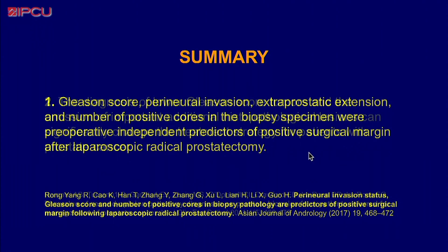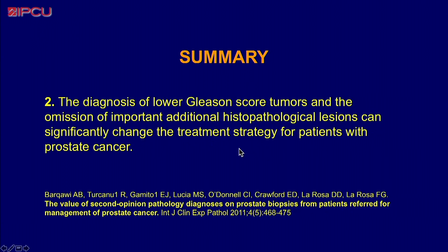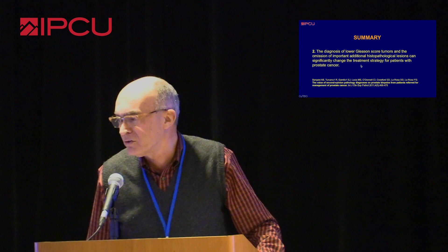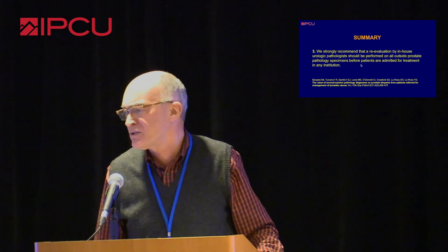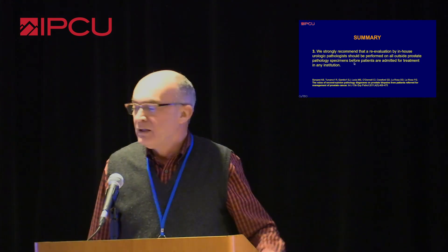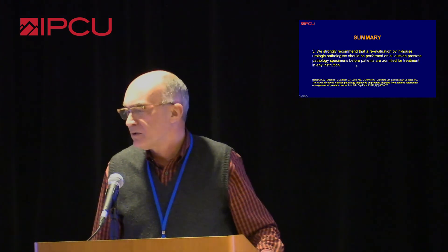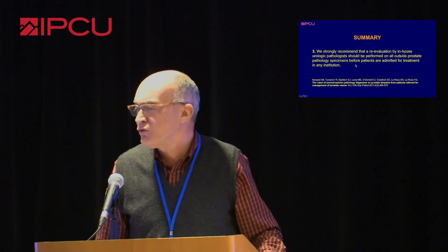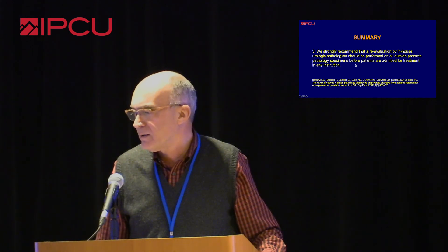So the summary: Gleason score and other factors are important. The lower Gleason score and omission of other histopathological features are important as well. We recommend that any cases coming from outside — and I think the majority of colleagues here are in major institutions — should always be reviewed by specialists, pathologists, especially in GU pathology. Thank you.